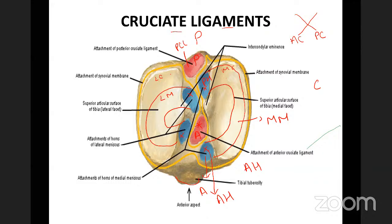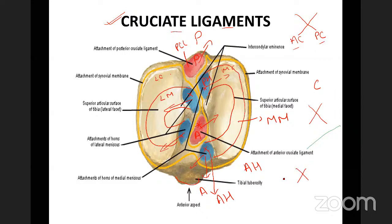There are two cruciate ligaments: anterior and posterior. They are called cruciate because they cross each other in an X shape. The anterior cruciate ligament is attached anteriorly on the tibia, and the posterior cruciate ligament is attached posteriorly on the tibia.